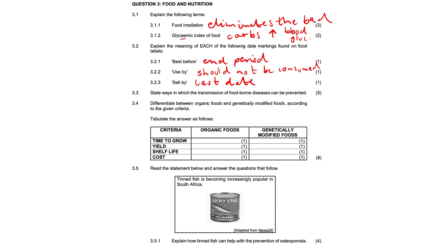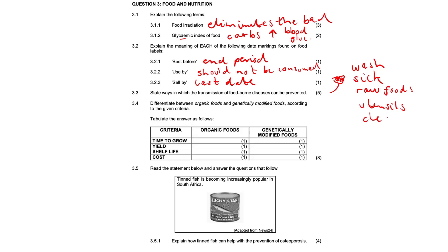3.3 — state ways in which the transmission of foodborne diseases can be prevented. A person must wash their hands before touching food, or after using the toilet or changing nappies. An infected person or person with symptoms should not prepare food. Raw foods must be washed thoroughly in clean, safe water. Utensils used to prepare raw foods must be washed thoroughly after use. And a fifth one — clean your work surfaces properly.